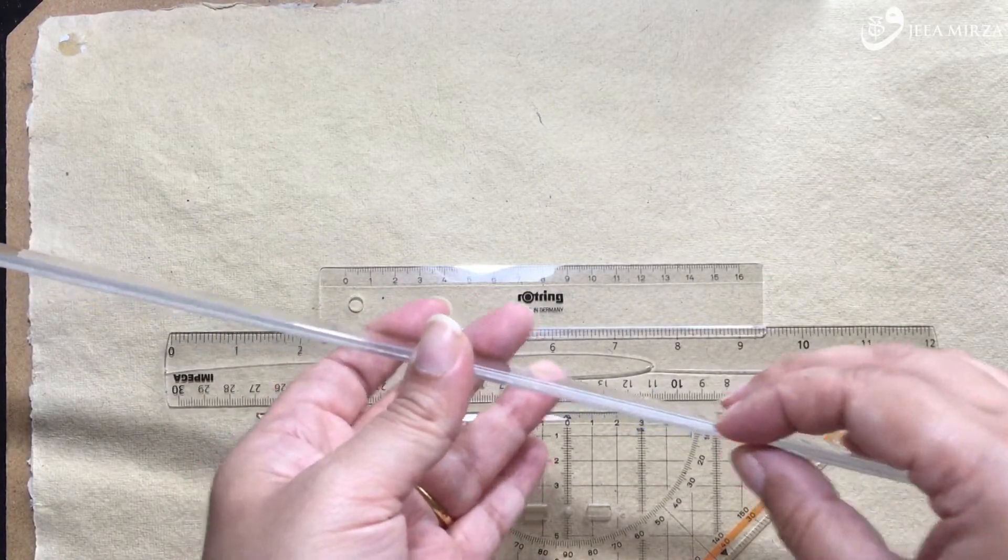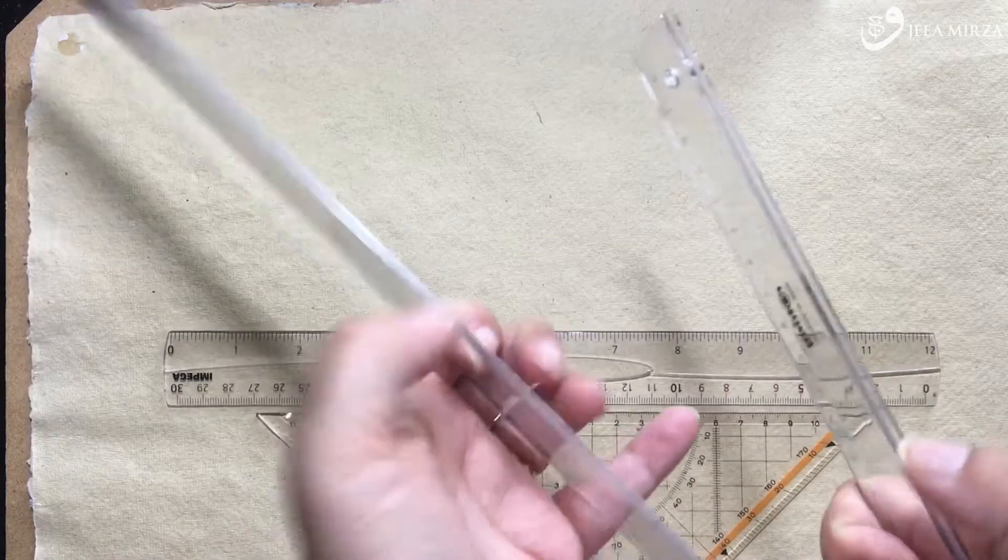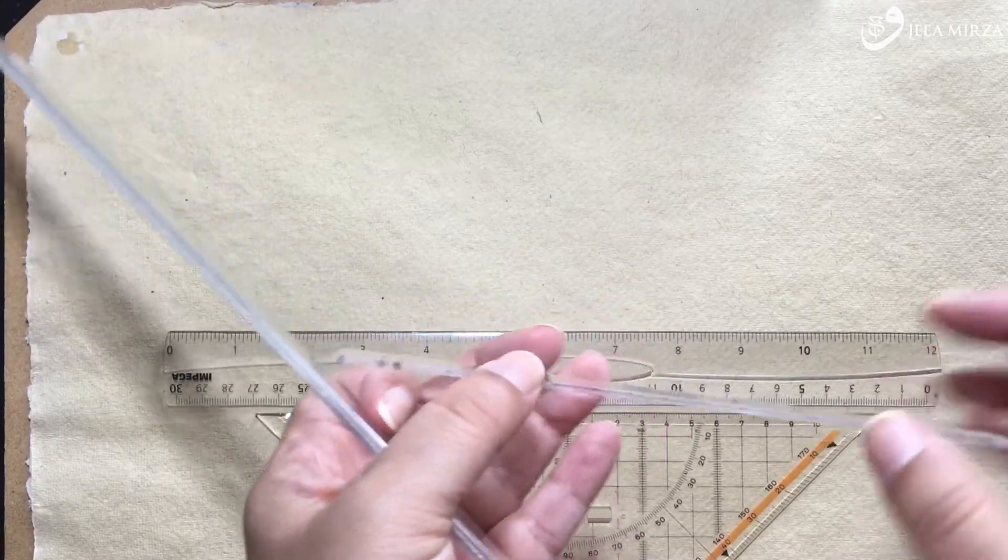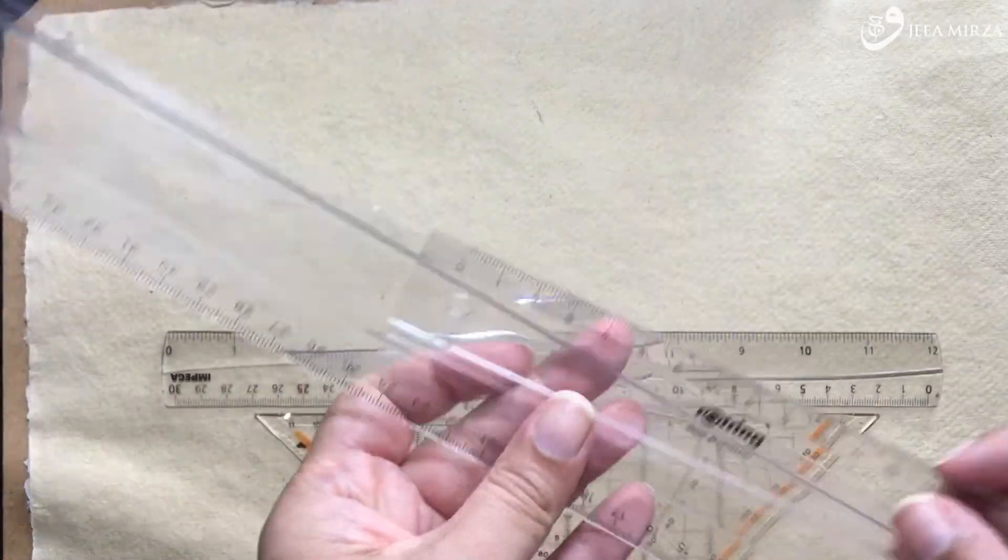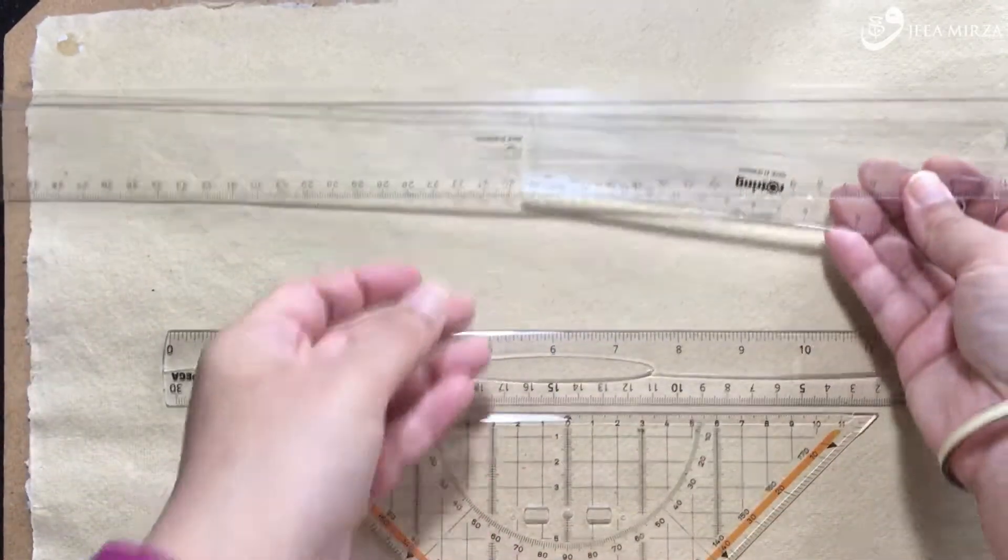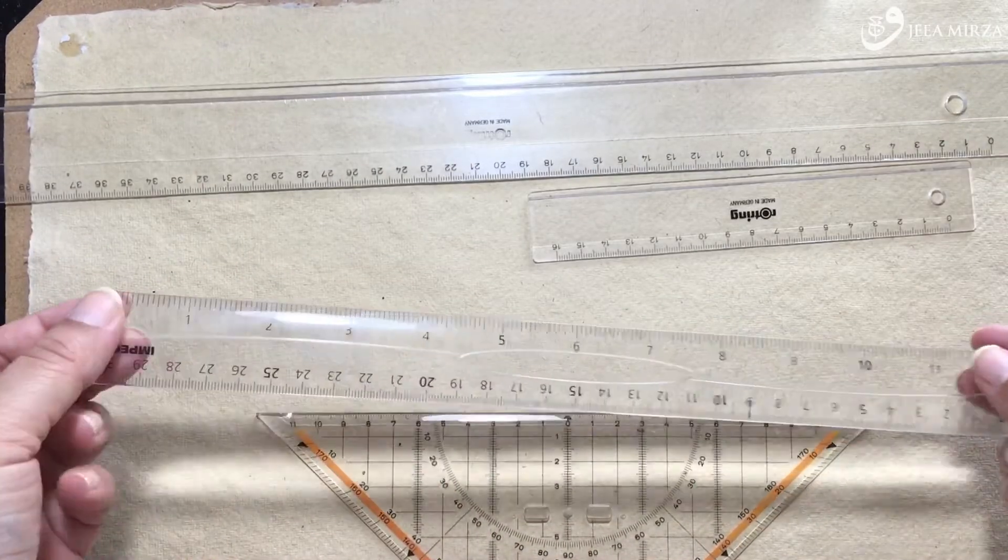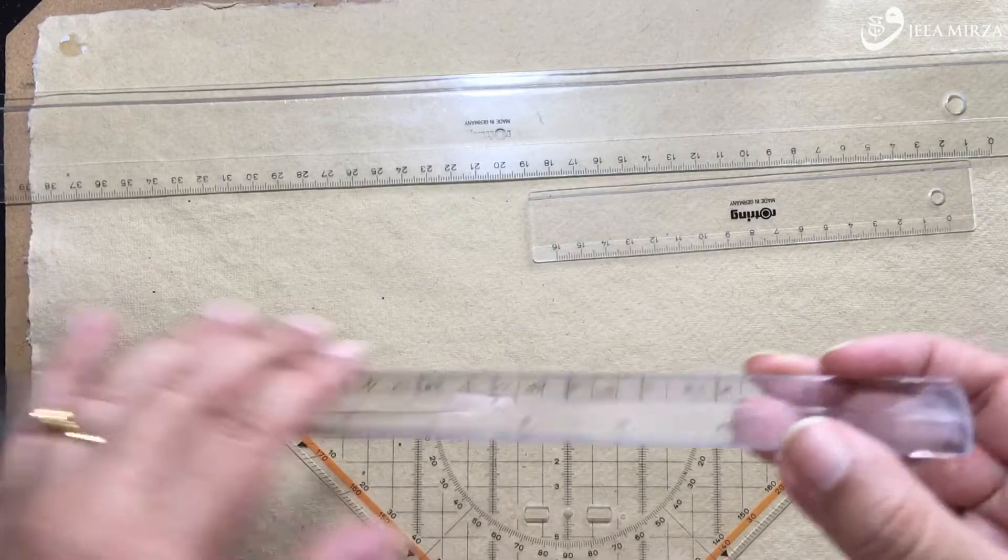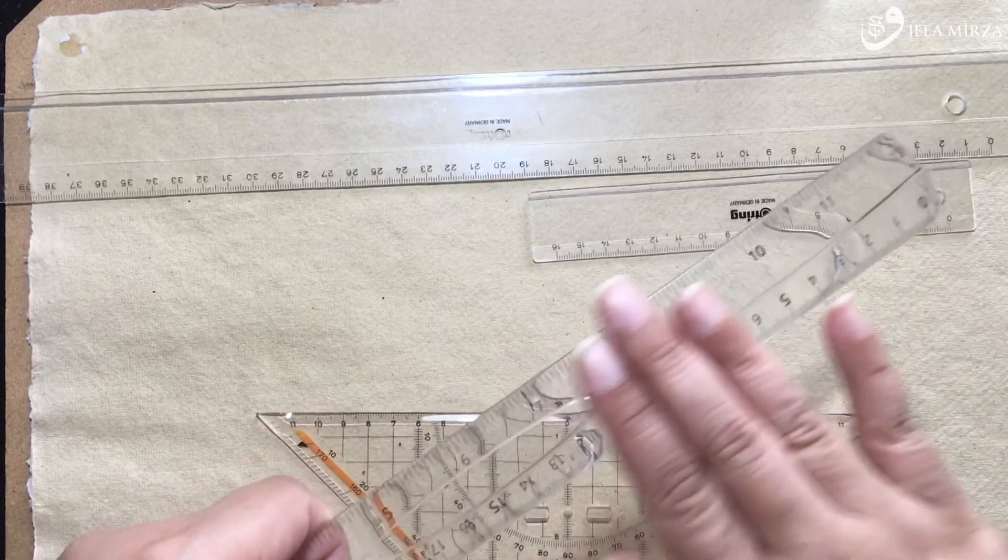The next thing I want to look at is my inking edge. You've probably all got rulers. The ones that I'm showing you right now from Rotring actually have a step built in, so they're undercut, which allows for easier inking.